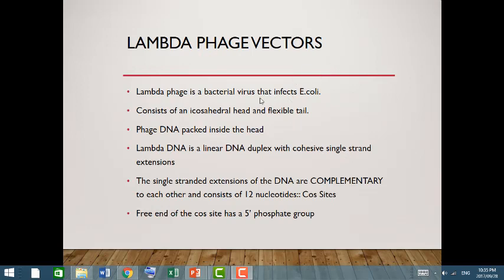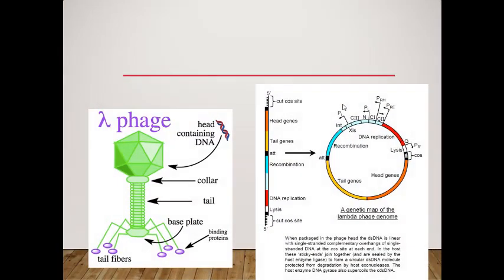Now we will talk about lambda phage vector. Lambda phage is a bacterial virus that infects E. coli. It consists of a capsid, has a head and flexible tail. Phage DNA sits inside the head. Lambda DNA is a linear DNA that replicates with cohesive ends. The cohesive ends of the DNA are complementary to each other and consist of 12 single nucleotide core sites. The free end of the core site has a five prime phosphate group. This is the diagram of lambda phage. You can see the head, tail, and different core sites and other tail and head gene regions of the lambda phage vector.